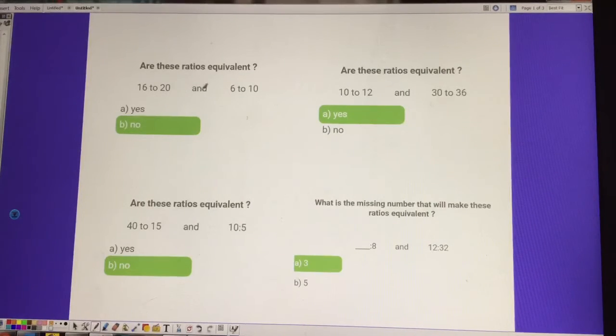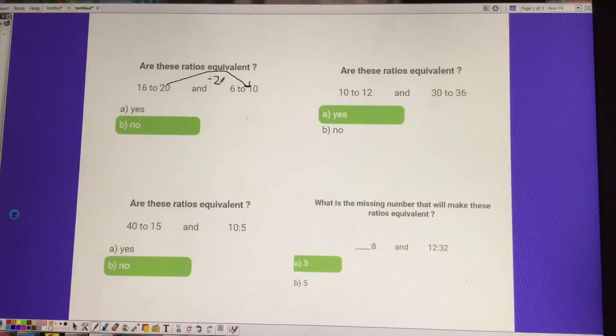16 to 20 and 6 to 10 are not equivalent, and here's why. To get from 20 to 10, you have to divide. Remember, for equivalent ratios, to keep it proportional, we have to multiply or divide. We have to divide that by 2.